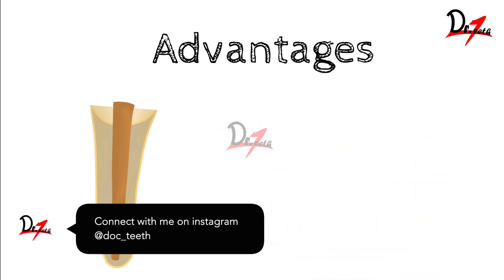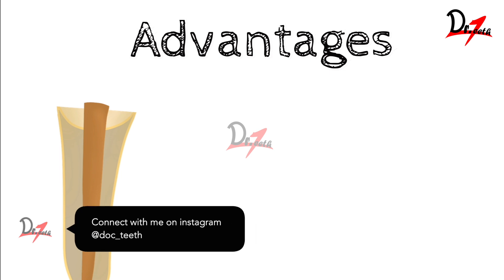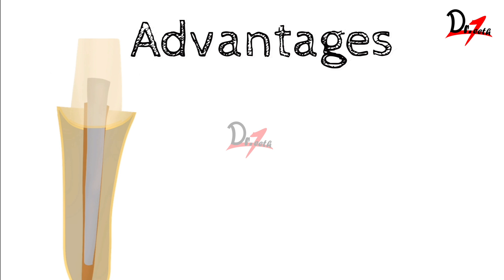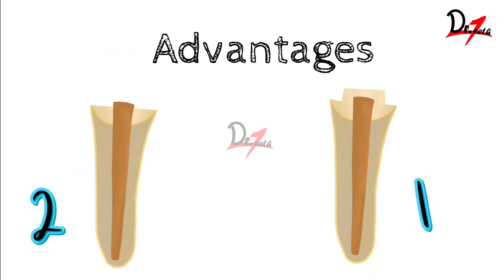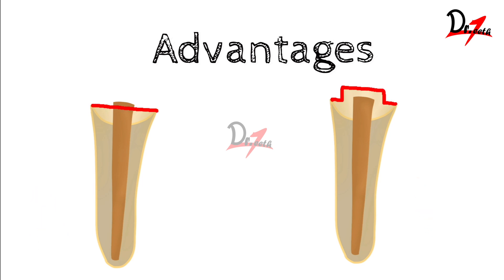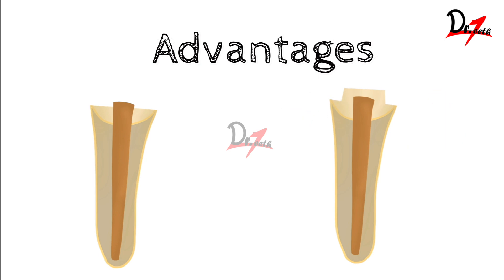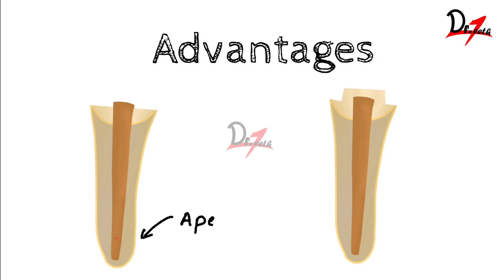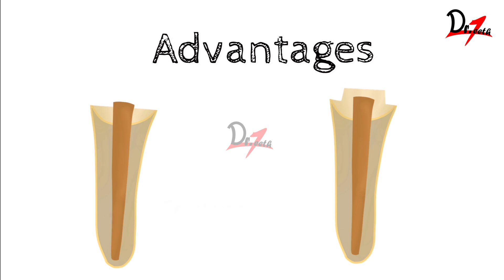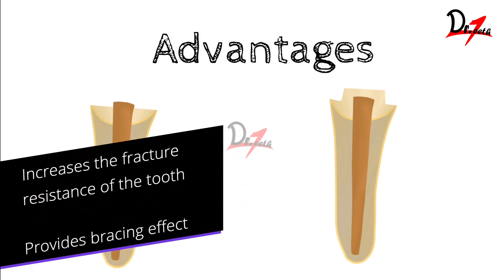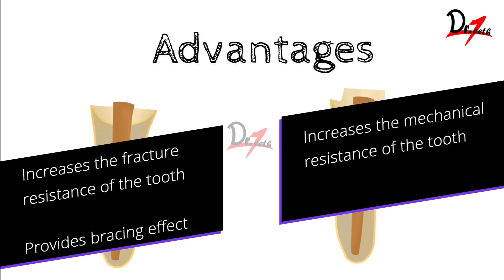Why is the ferrule important? Why do we need that sound tooth structure rather than just placing a post and core? Comparing two conditions — ferrule present versus ferrule absent — when forces act on a tooth with proper ferrule, those forces are well tolerated. But when the ferrule is missing or insufficient, the dentine of the root experiences significant shearing forces, especially at the apex region, leading to a high risk of root fracture. The advantages of ferrule are: it increases fracture resistance, provides a bracing effect, and increases mechanical resistance.